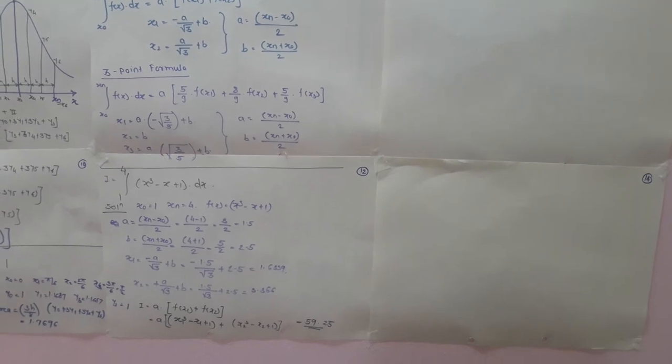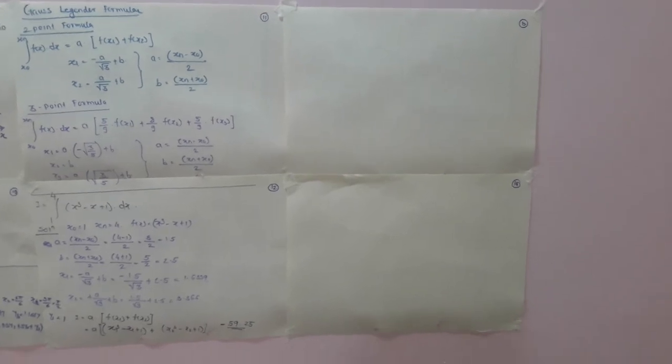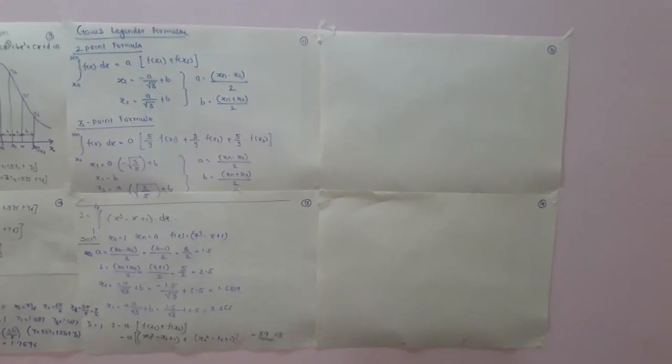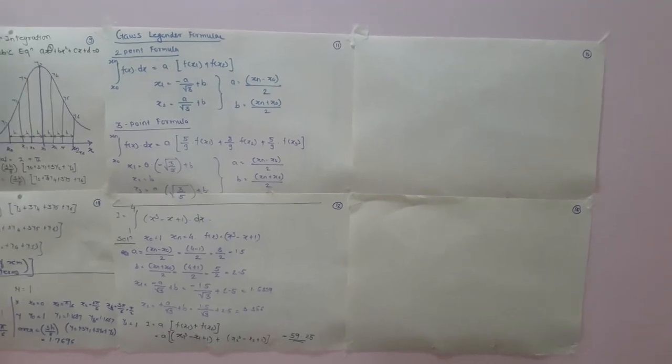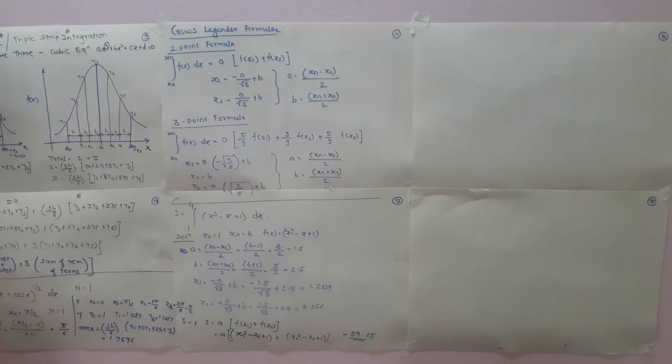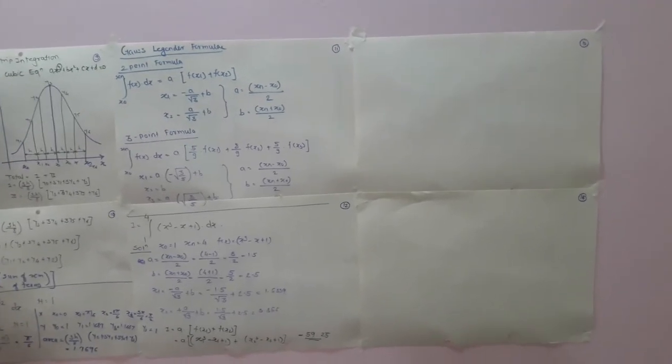Similarly, all of you may now understand how to evaluate using the Gauss-Legendre two-point formula. We can also evaluate the answer using the three-point formula by computing x1, x2, and x3, substituting into the given formula, and obtaining the result. Now we will stop here, and in the next lecture we will discuss the summary of the entire integration chapter.